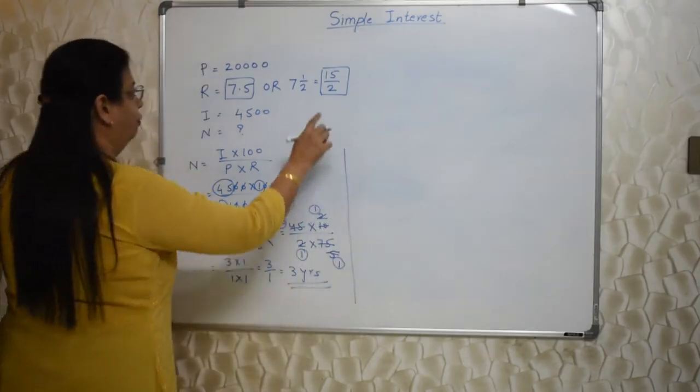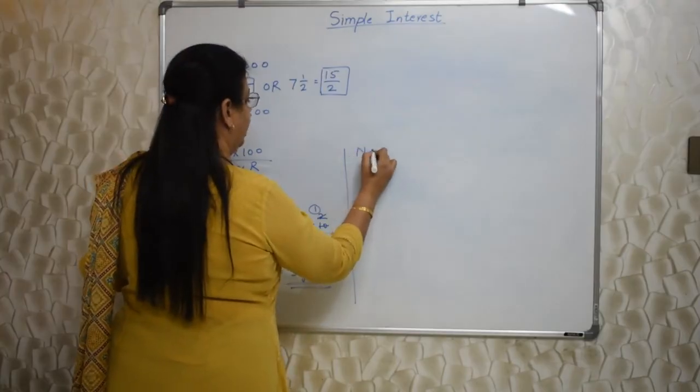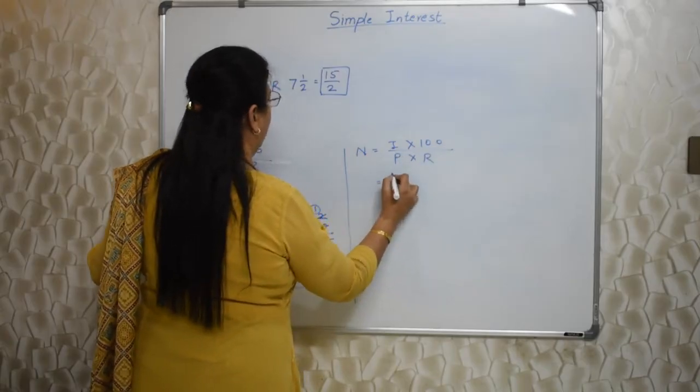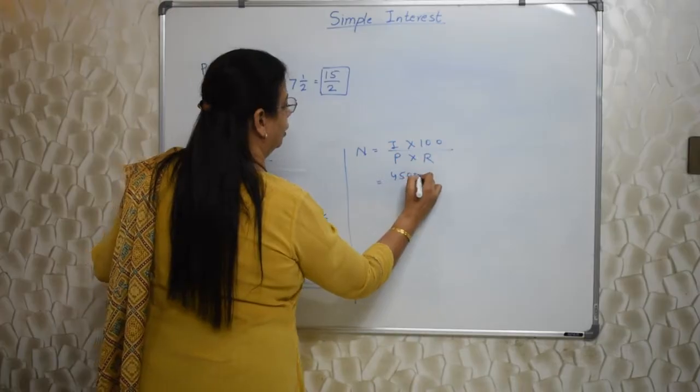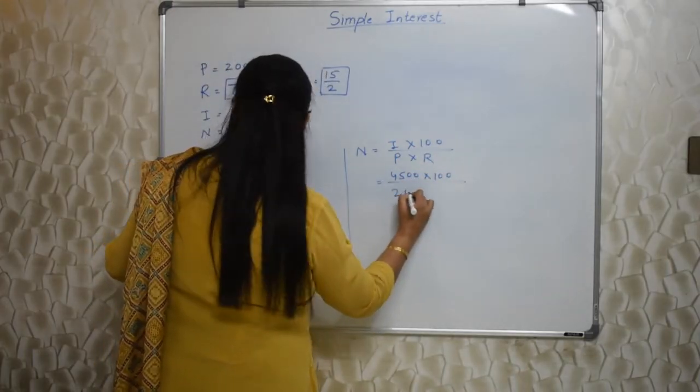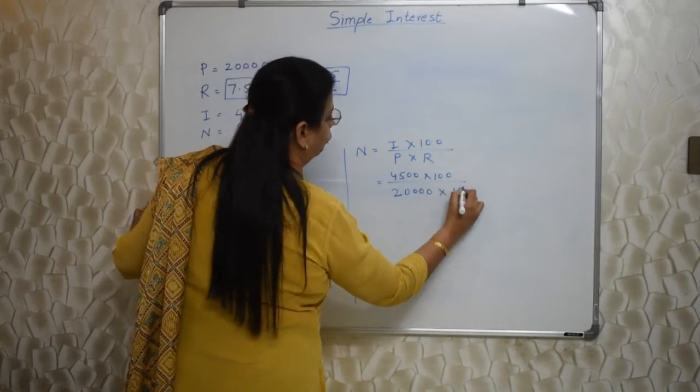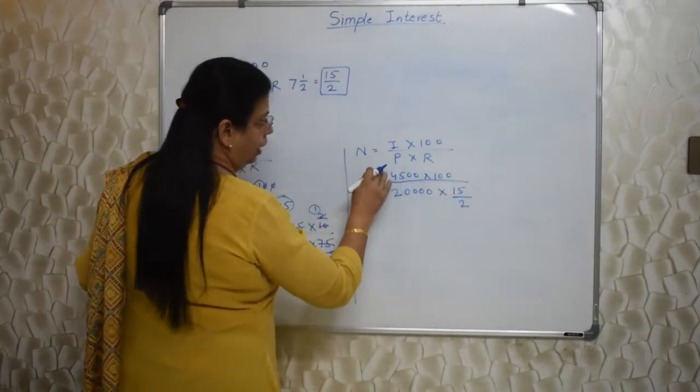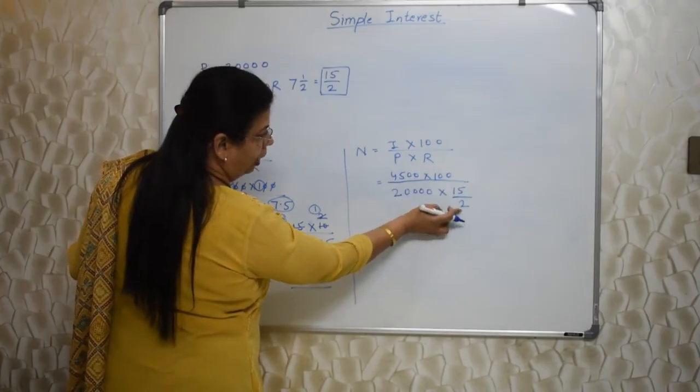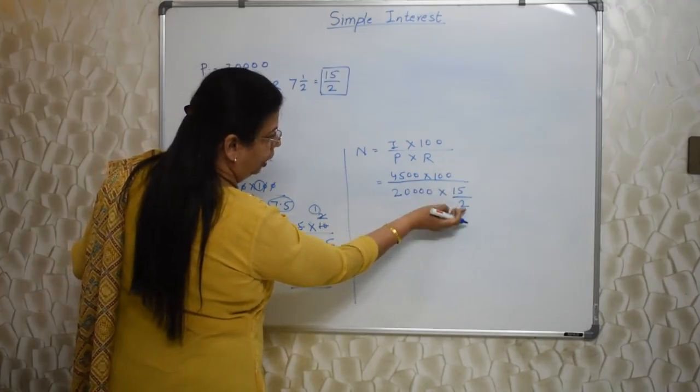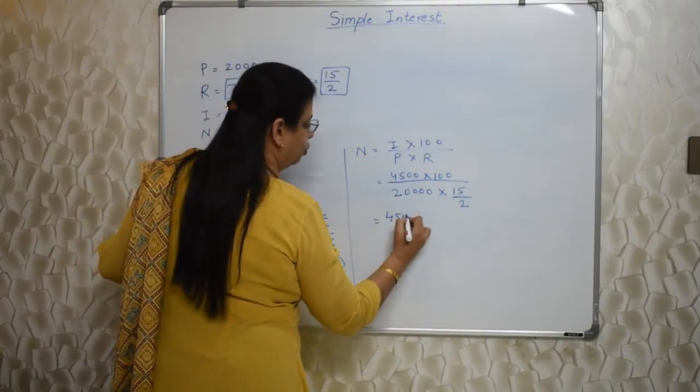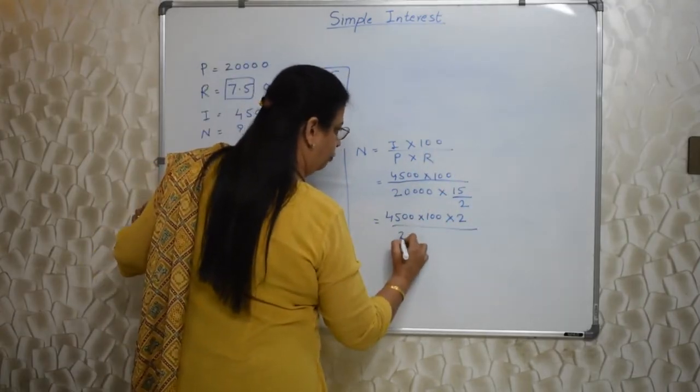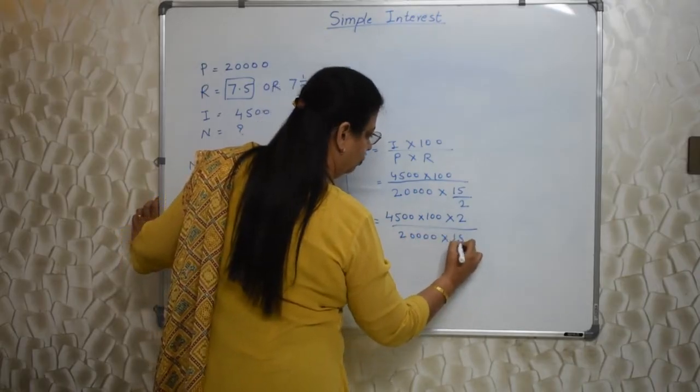Now we will do it with the help of this fraction. Again we will rewrite the formula for number of years. That is N. I is 4500 into 100 upon P is 20000 into R is 15 upon 2. Now here there is upon and again upon. So when there is upon and upon, this extreme down portion or the denominator will go up. So it will look like this. 4500 into 100 and this 2 will go up with 100, and only 15 will remain down. Please be careful here.